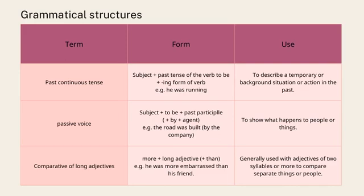Past Continuous Tense: to describe a temporary or background situation or action in the past. Passive Voice: to show what happens to people or things. Comparative of Long Adjectives: generally used with adjectives of two syllables or more to compare separate things or people.